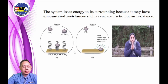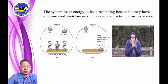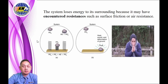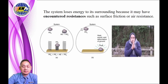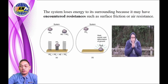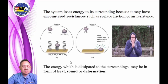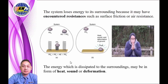This figure shows two different situations of an isolated or closed system represented by a circle. The first system has a rock thrown on a spring, causing the rock to bounce back up and resulting in less energy loss to the surroundings. The rock in the second system is thrown on the ground, resulting in a lot of energy loss to the surroundings. The energy dissipated to the surroundings may be in the form of heat, sound, or deformation.